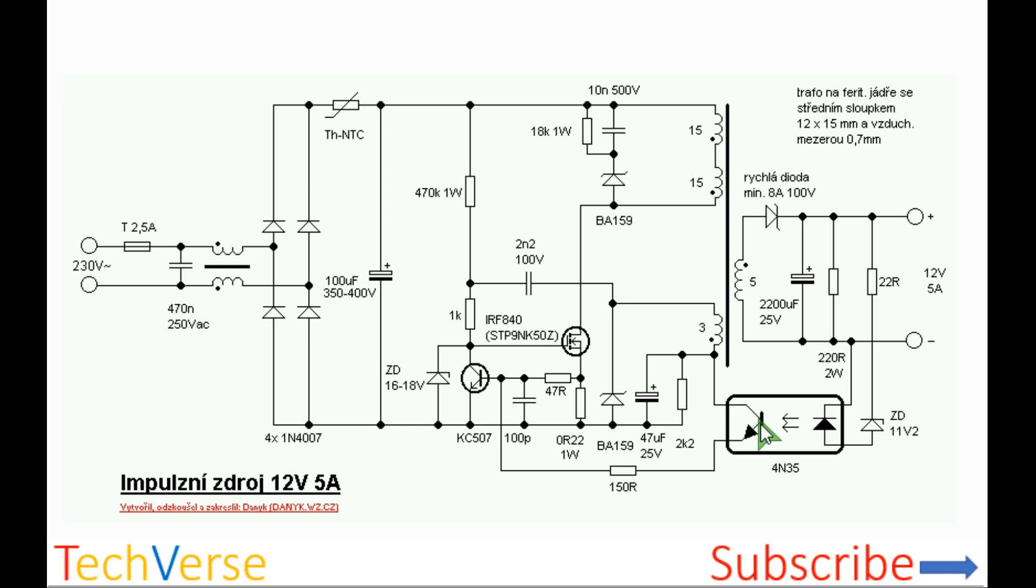This will turn on the internal transistor of the optocoupler, which if you follow the current path, will provide a base bias for the feedback transistor. The transistor will turn on, and this will immediately turn off the switching MOSFET. This will limit the duty cycle.